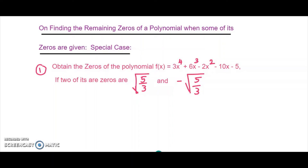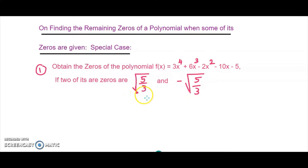In this video we learn the special cases of finding the remaining zeros of the polynomial when some of the zeros are given. The first question where we are taking a special case is that the two zeros are given as root 5 over 3 and negative root 5 over 3.